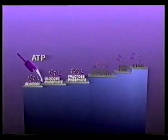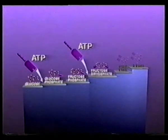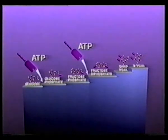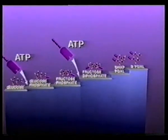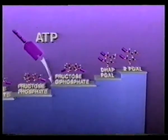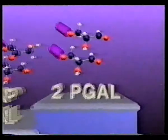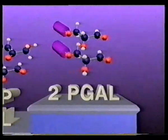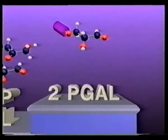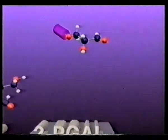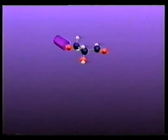In the first five reactions of glycolysis, we followed the energy path from glucose step by step as it is split into a pair of three-carbon molecules of PGAL. For the second half of glycolysis, bear in mind that although everything occurs in duplicate, we're going to track only one PGAL.